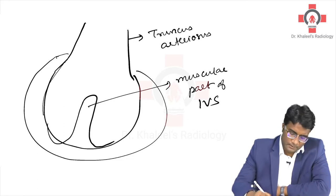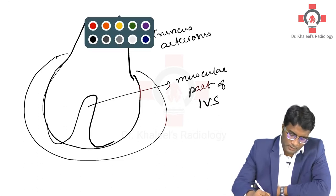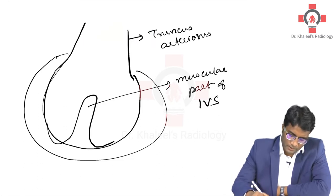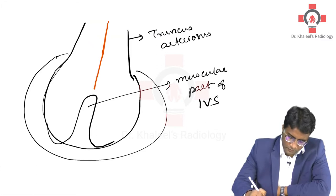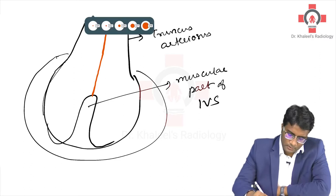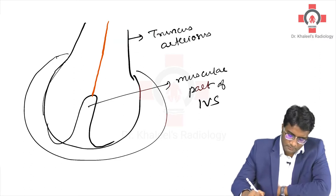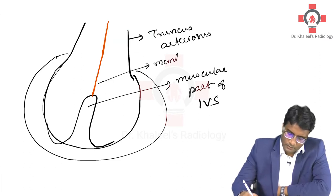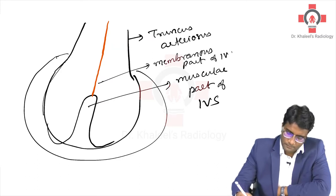The endocardial cushions as well as the aorticopulmonary septum then develop in the truncus arteriosus, and they contribute to the membranous part of the interventricular septum.